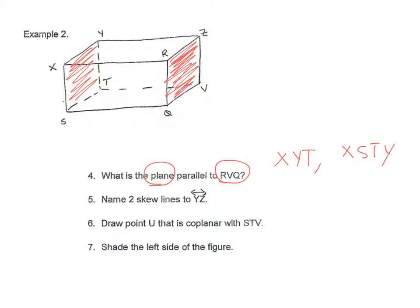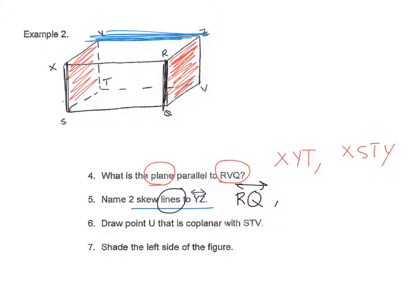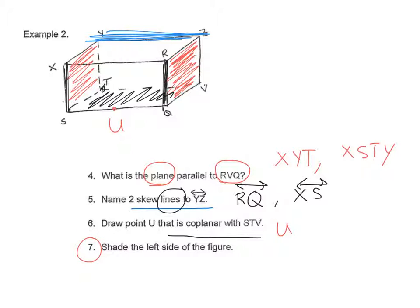Name two skew lines to YZ: skew means non-coplanar and doesn't intersect, so line RQ works, and line XS also works. To draw a point U coplanar with plane STV: STV is the bottom, so I place point U on that plane. For number seven, shade the left side of the figure — the front is the front, the right is the right, so this must be the left, and it's already shaded.